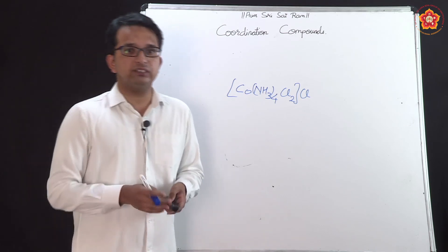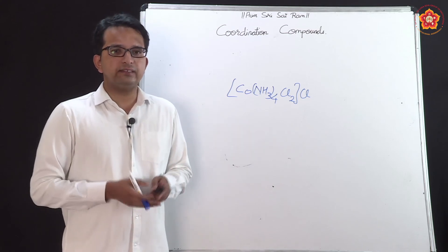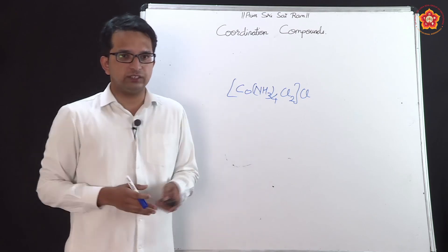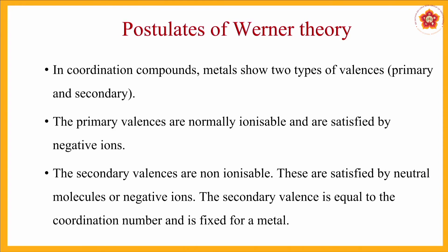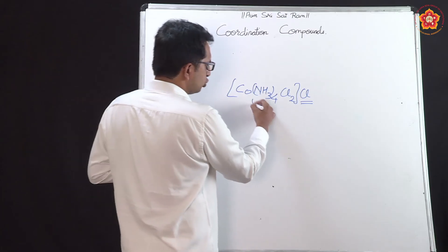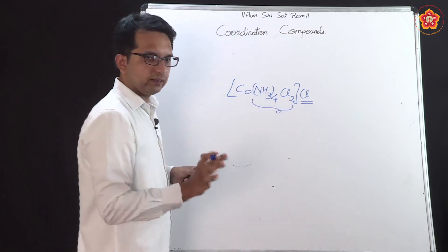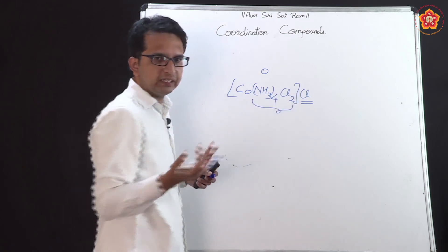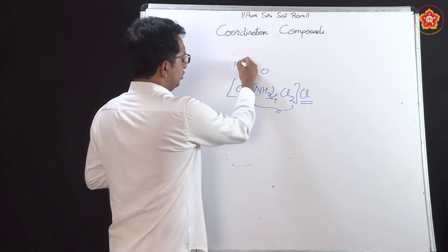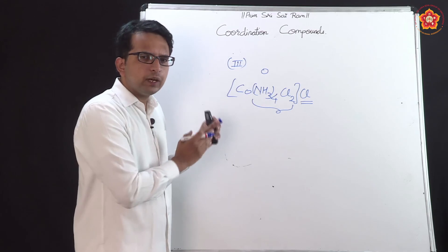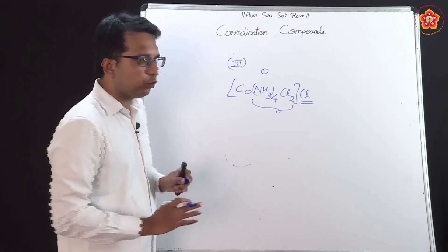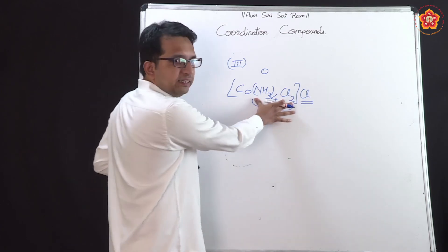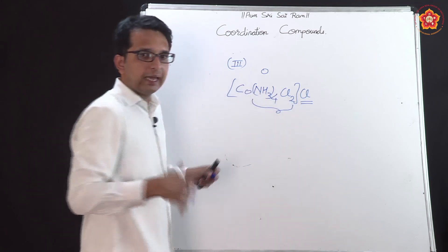Let us now see the postulates of Werner's theory. Having studied all these compounds, he put forward certain key points. Coordination compounds show two types of valency. Primary valencies are those present outside the square bracket — they will dissociate. Secondary valencies are those inside — they will not dissociate but can lead to charges. For example, amine is a neutral ligand with charge 0. Two chlorines inside and one chlorine outside give 3 negative charges total, so the charge on cobalt is +3. Those inside acting as electron donors to the metal are the secondary valency.